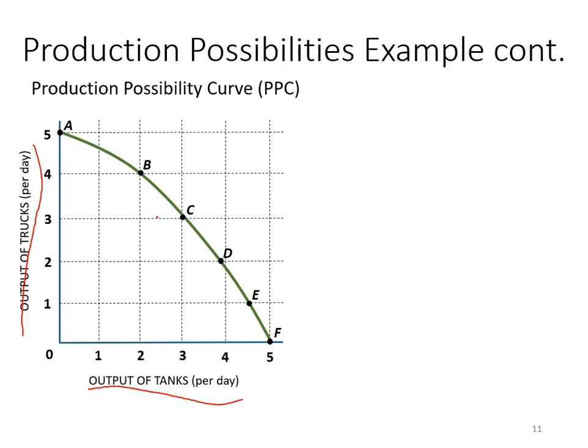At the beginning of this video, I mentioned that from the production possibilities you can find the three concepts from our previous lesson. The first one is scarcity — there is a limit to output. Where can we find this concept on the production possibility curve? You can see the maximum amount of trucks you can produce is five, and at that moment you cannot produce any tanks.